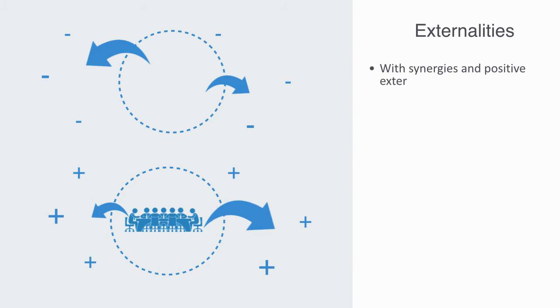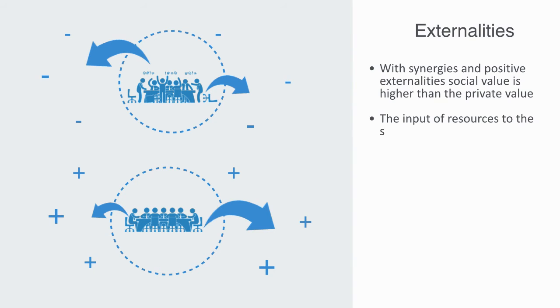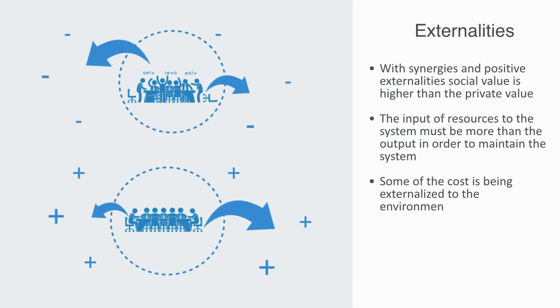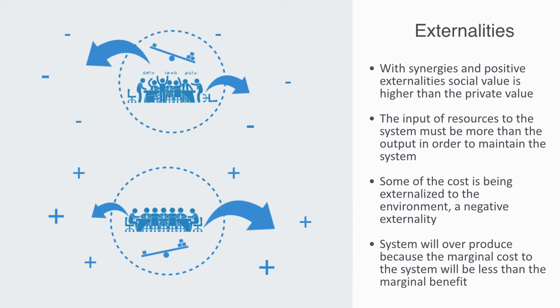With synergies and positive externalities, social value is higher than the private value. With interference, the system will be less than the sum of its parts, and thus the input of resources to the system must be more than the output in order to maintain the system. Meaning the system's environment is paying the cost for running the system. The social cost is higher than the private cost. Some of the cost is being externalized to the environment, a negative externality. Thus the system will overproduce, because the marginal cost to the system will be less than the marginal benefit.